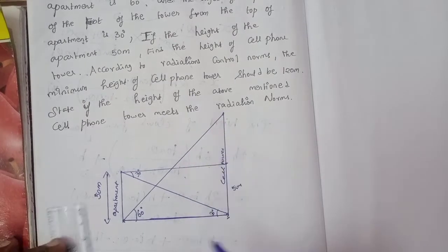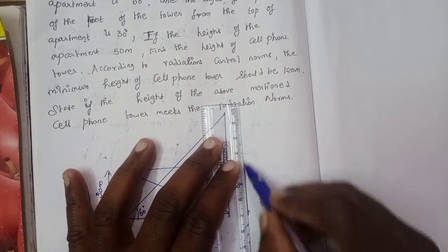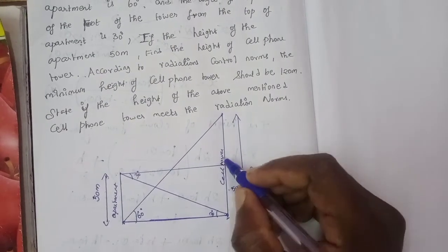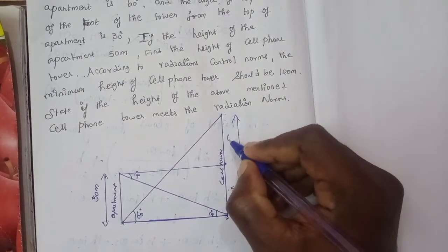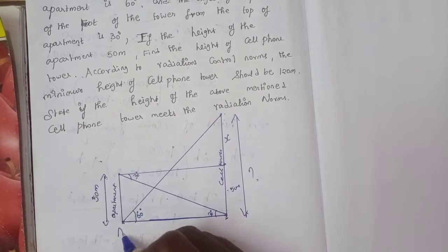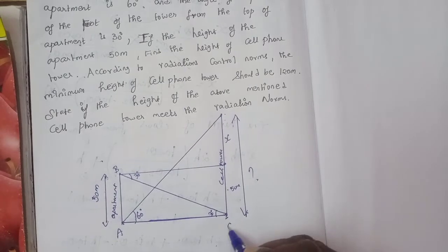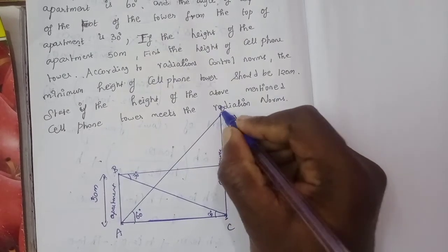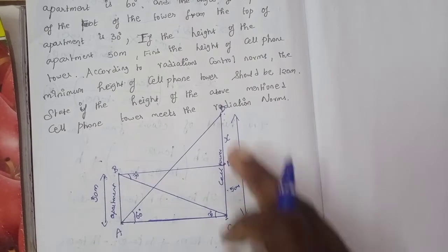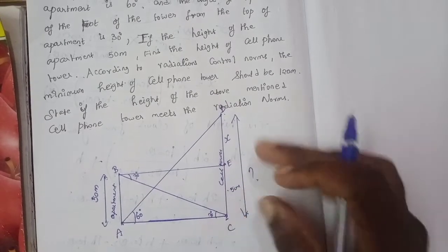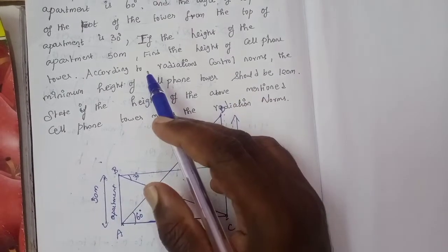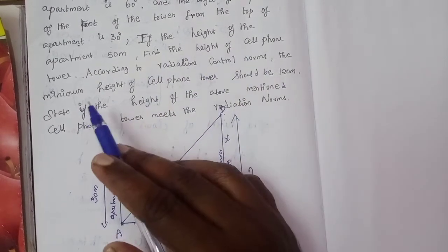Now, we are talking about this tower. This tower's height we take as x. We label the points A, B, C, D, E. This is the height of the cell phone tower.